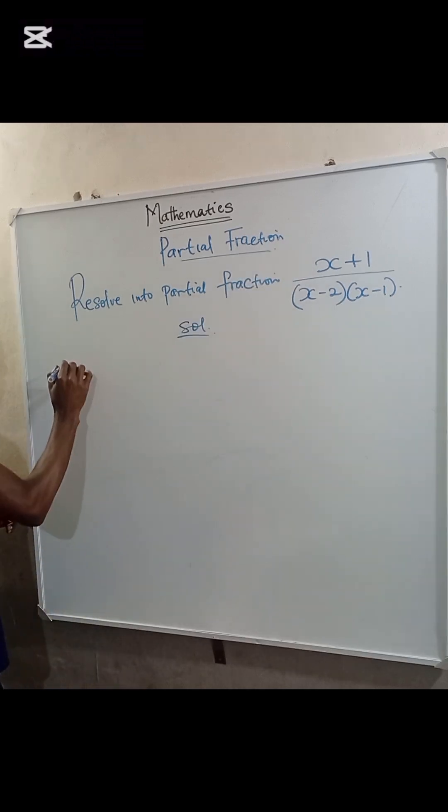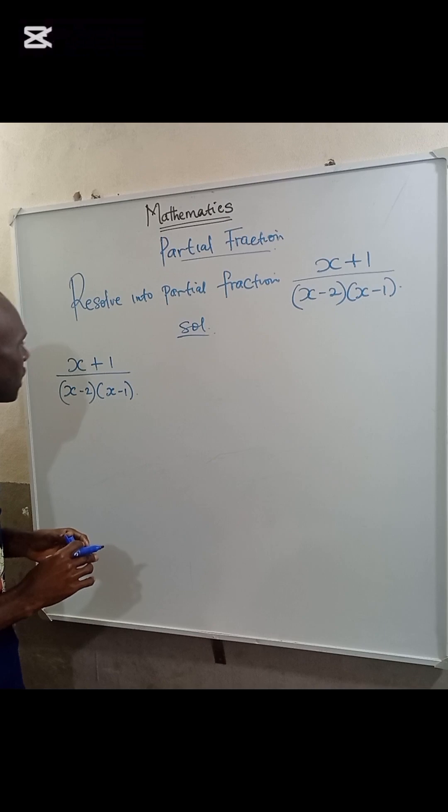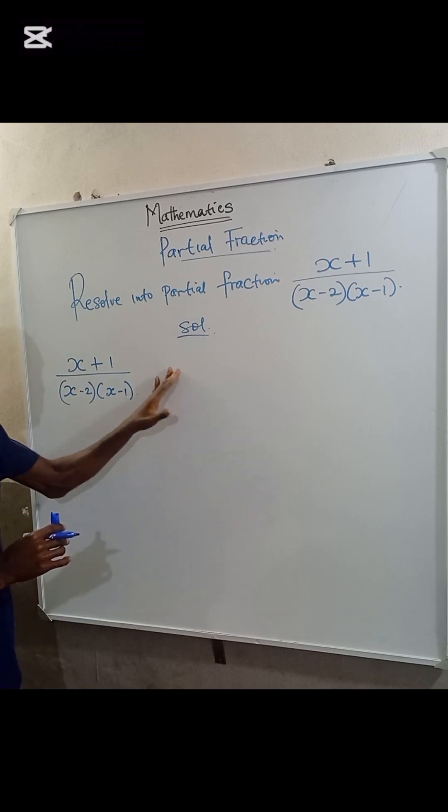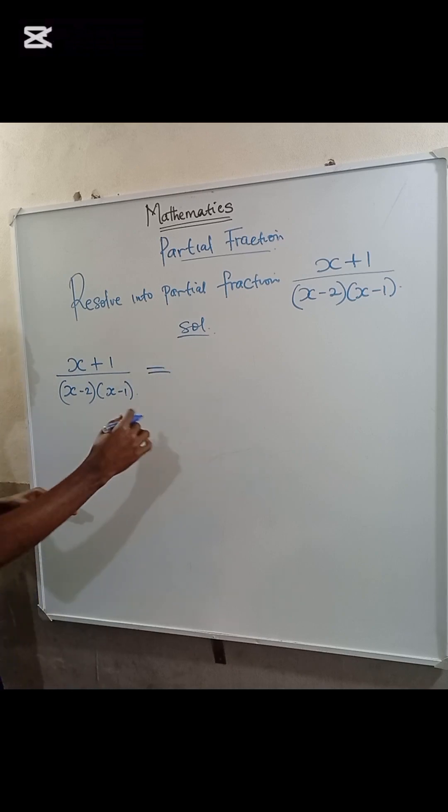So we have that X+1 over (X-2)(X-1). The first thing we do here is that we split the fraction into parts. And to resolve this, the right-hand side will look like this.